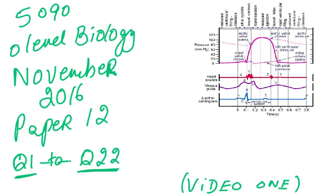5090 all about biology. We're going to do the November 2016 paper 1 and 2, and we're going to do the first 22 questions. We're going to start Bismillahirrahmanirrahim.